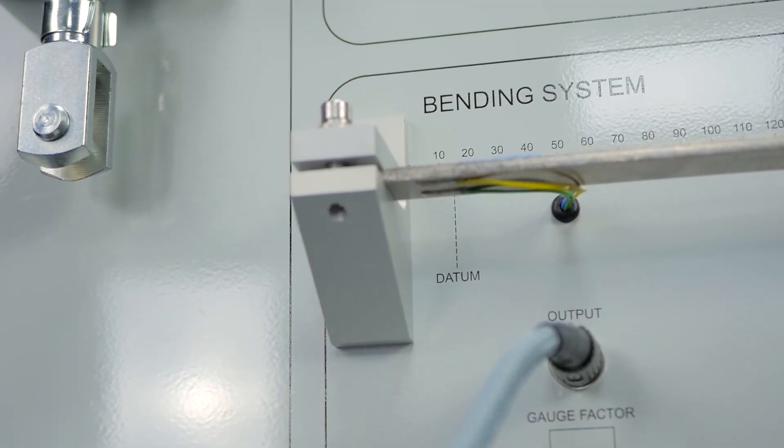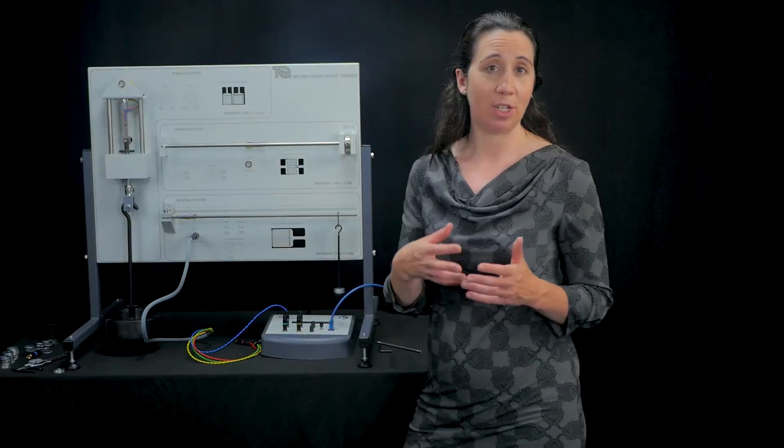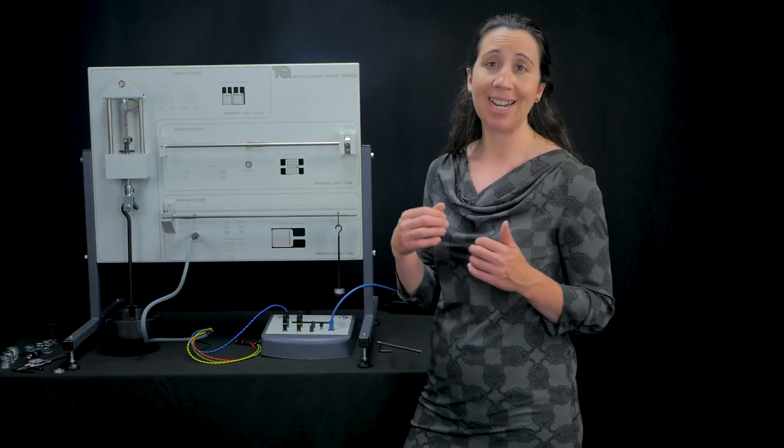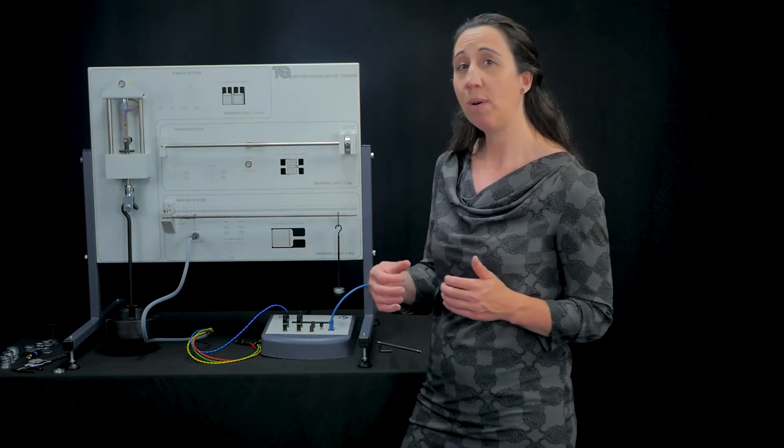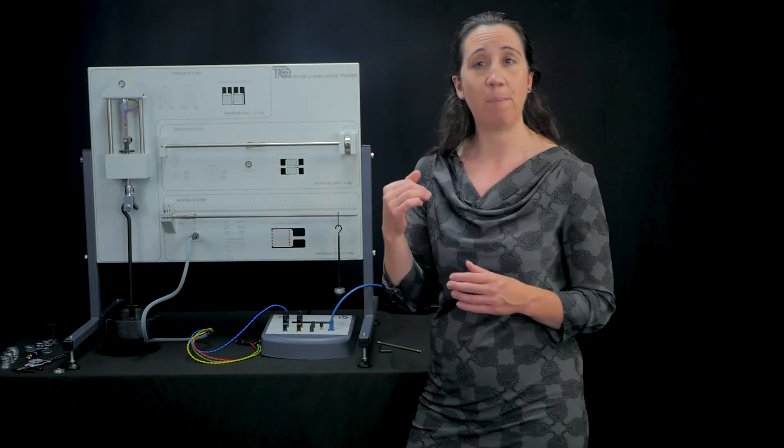There is a solid rectangular section cantilever beam held securely at this end. Four strain gauges measure the tensile and compressive strains directly in line with the beam. The two on top measure the tensile strain and the two underneath measure the compressive strain.